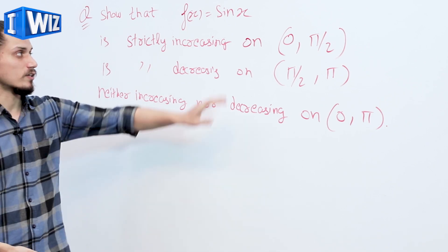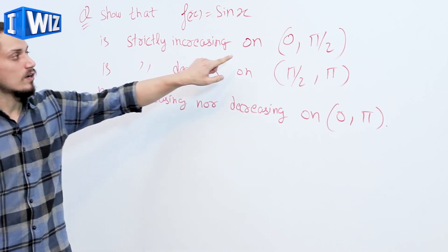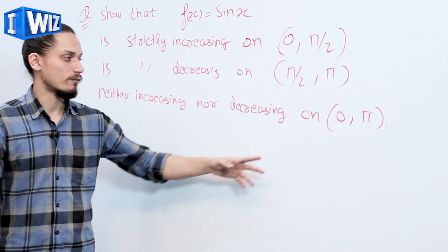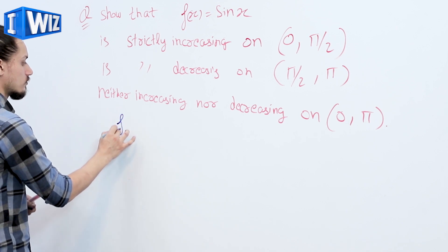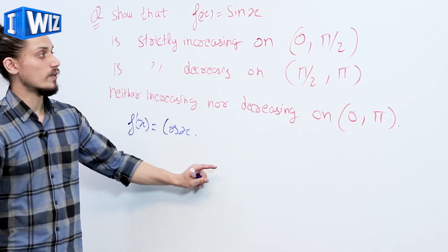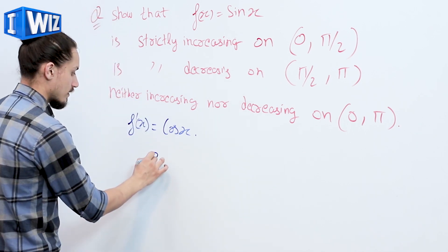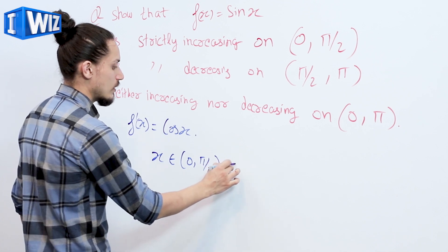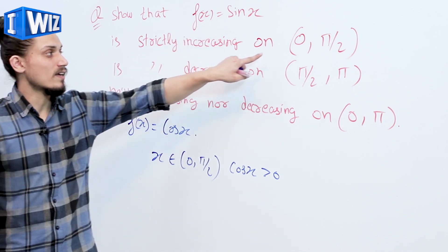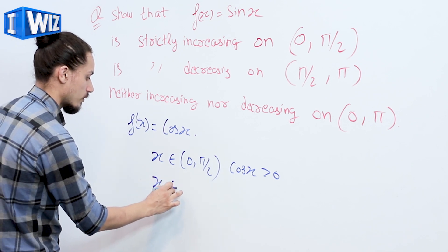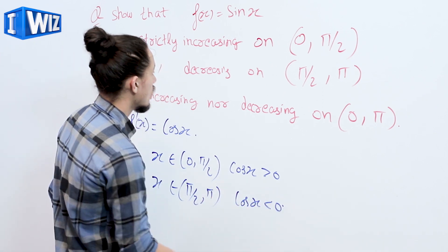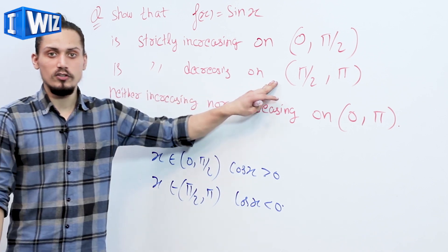In this example, f(x) equals sin x. We have to show it is strictly increasing on (0, pi/2), strictly decreasing on (pi/2, pi), and neither on (0, pi). f'(x) equals cos x. For every x in (0, pi/2), cos x is always greater than 0, so f is strictly increasing on (0, pi/2). For every x in (pi/2, pi), cos x is always less than 0, so f is strictly decreasing on (pi/2, pi).